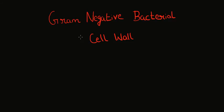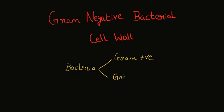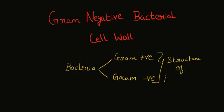Hi, and welcome to this video on gram-negative bacterial cell wall. Bacteria can be classified broadly into two: gram-positive and gram-negative. This classification is based on the structure of the bacterial cell wall, which means the bacterial cell wall structure is quite important.